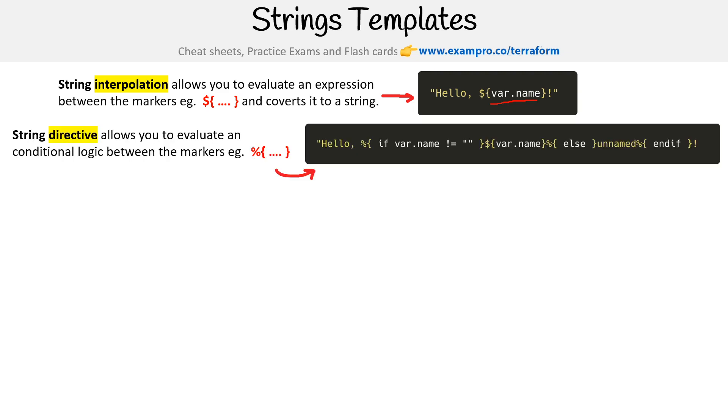Okay, then you have string directives. And these are slightly different. This allows you to evaluate an expression for a conditional logic between the markers. So let's say we want to have an if else statement. So if the name is blank, then use var name, or if it's not blank, then use the name provided. Otherwise, put it as unnamed.